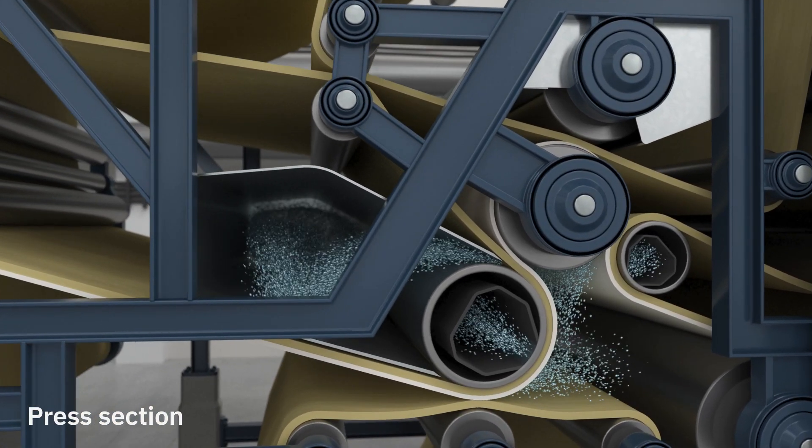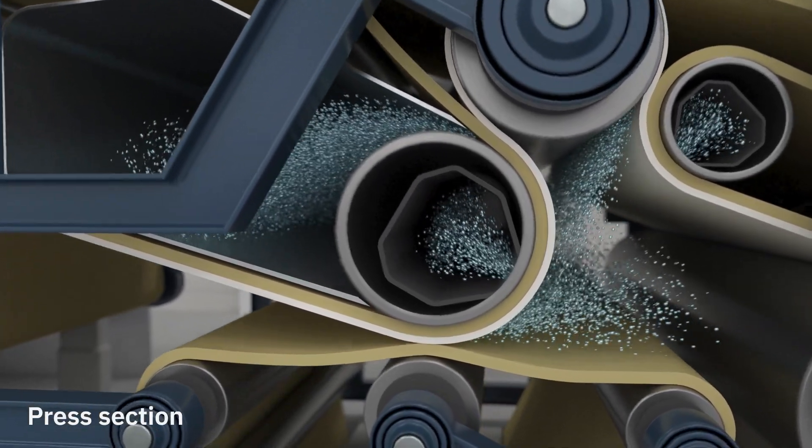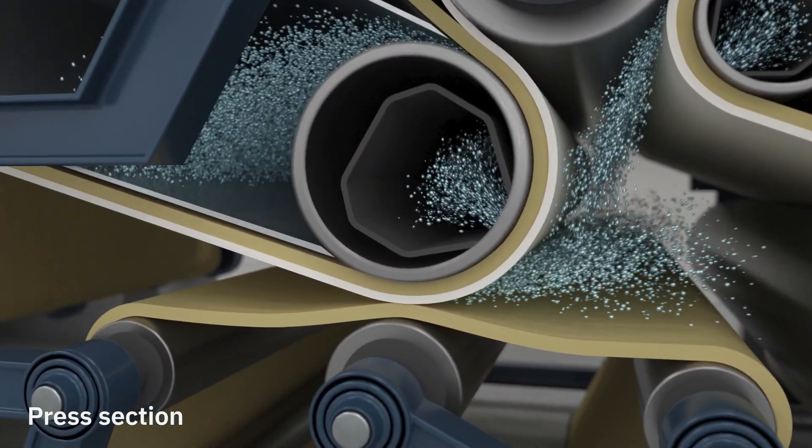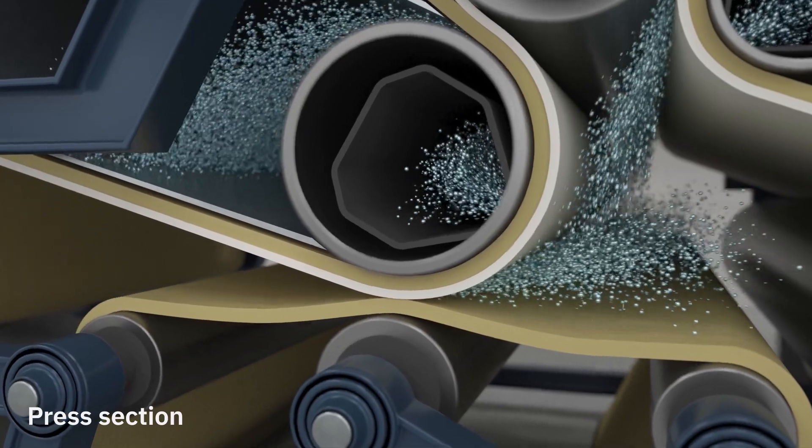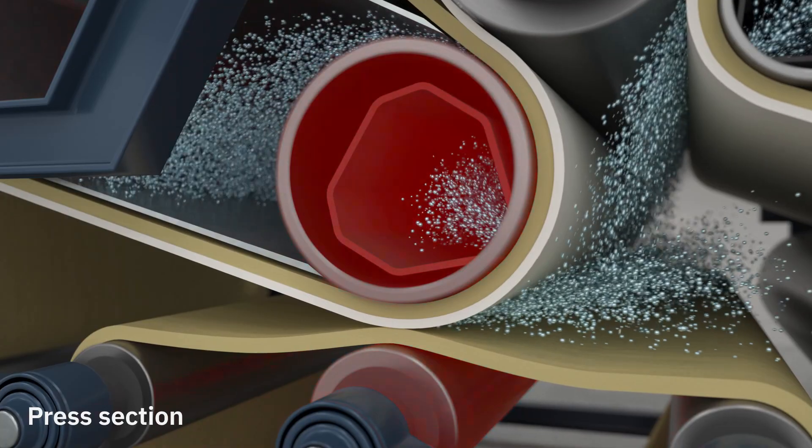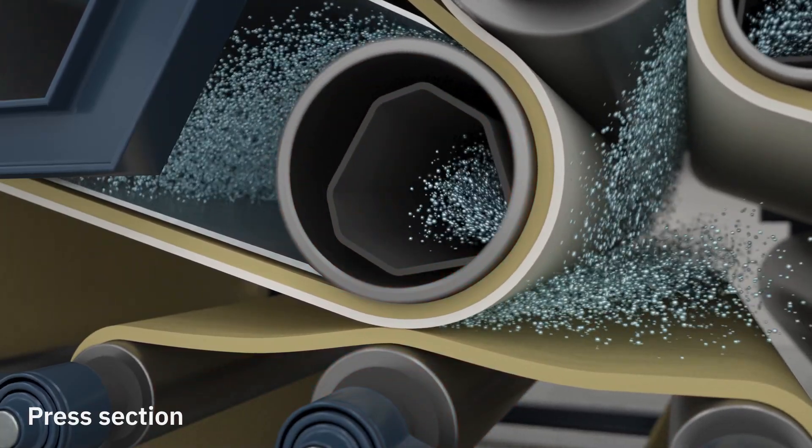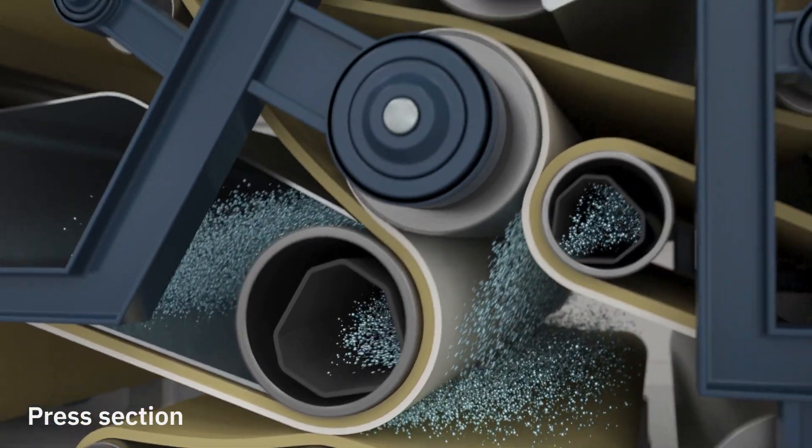When entering the press section, the paper web has a dryness of around 20%, so it still contains 80% water. To increase the dryness, the paper web is compressed between two felts in the press nip. When the pressure is released, the felts suck water from the web like a sponge. This is repeated in two more press nips.